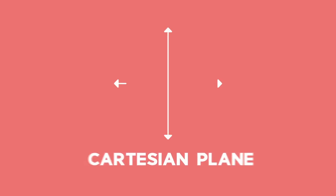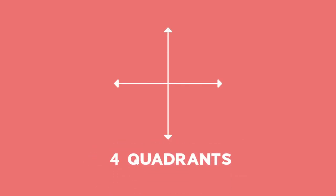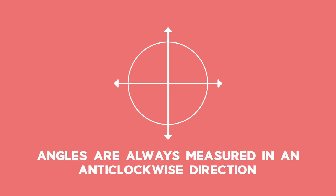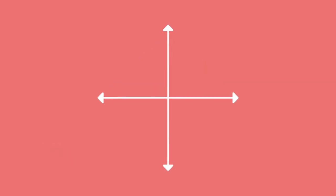The Cartesian plane is divided into four quadrants in an anti-clockwise direction. Angles are always measured in an anti-clockwise direction. The four quadrants are 1, 2, 3, and 4.